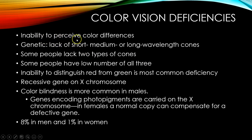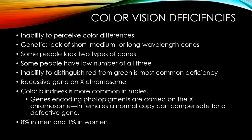Color vision deficiencies — the inability to perceive color differences, or color blindness — can be genetic, due to the lack of short, medium, or long wavelength cones. Some people lack two types of cones, or some have a low number of all three. The most common is the inability to distinguish red from green, which seems to be related to a recessive gene on the X chromosome. Color blindness is more common in males — about 8% in males versus 1% in women — because genes encoding photopigments are carried on the X chromosome. Females have two X chromosomes, so a normal copy can compensate for a mutated one. Males have an X and a Y chromosome, so if there's any defect on that X chromosome encoding photopigments, there's no backup copy.